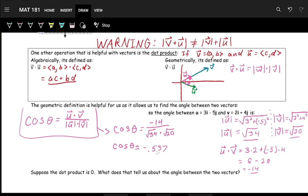And then using inverse cosine, you have theta is approximately 122 degrees, 122.47 degrees.